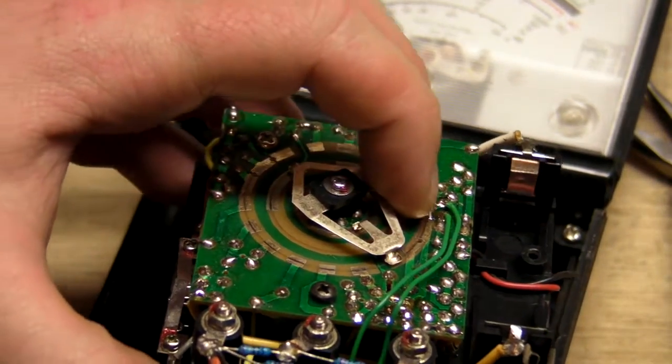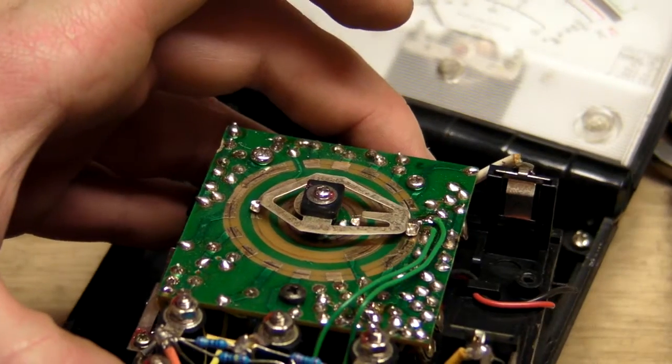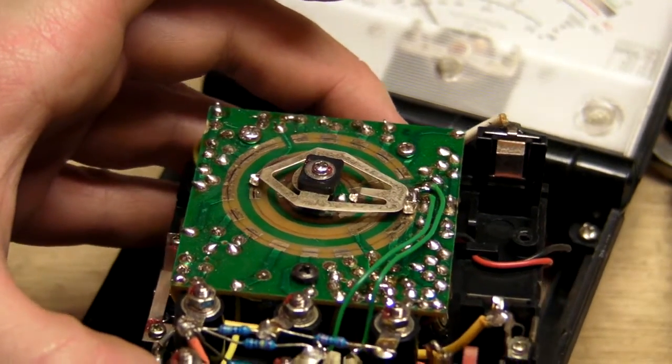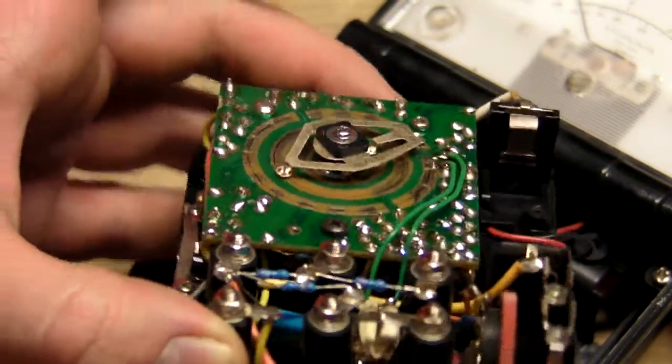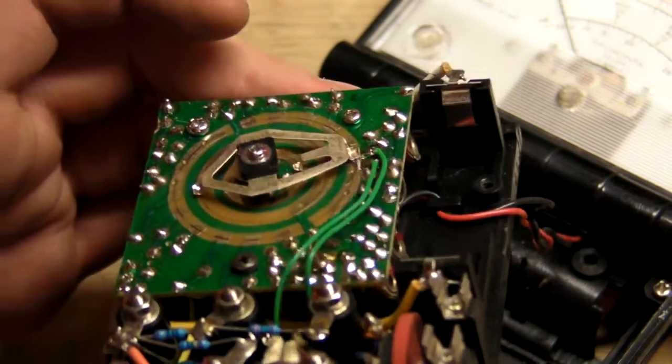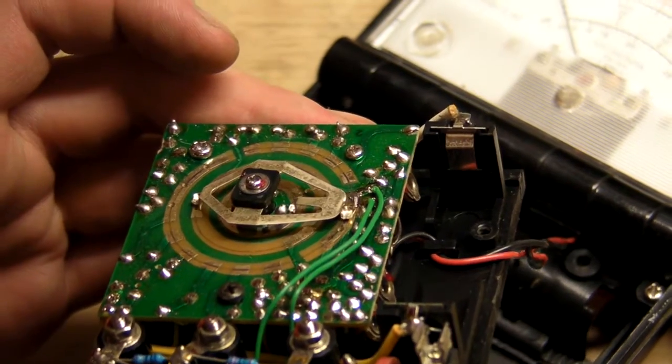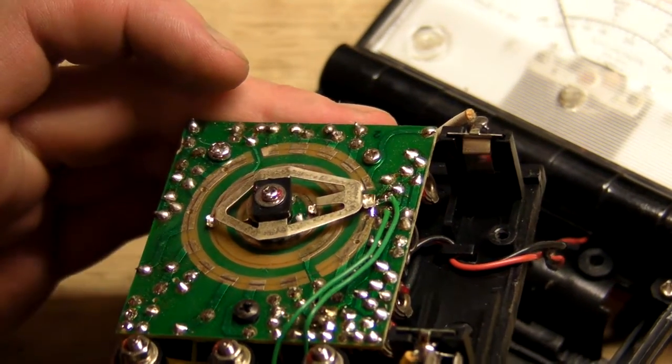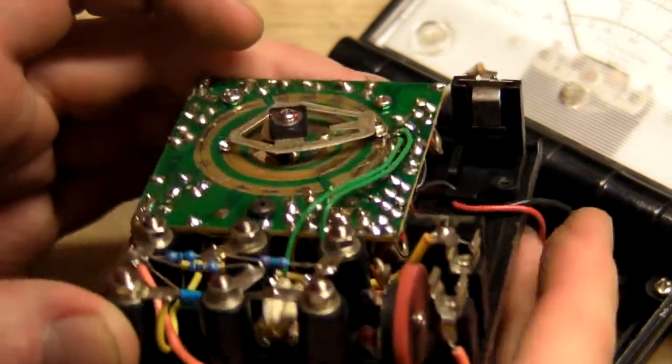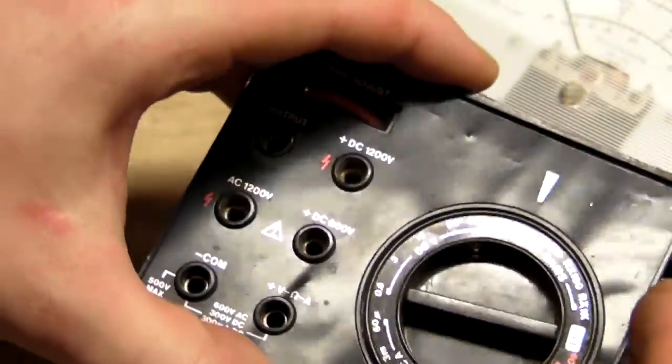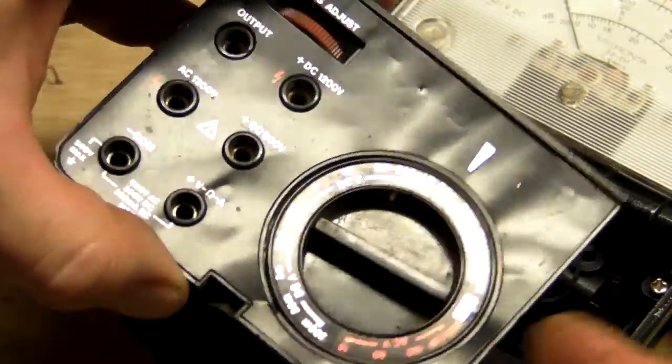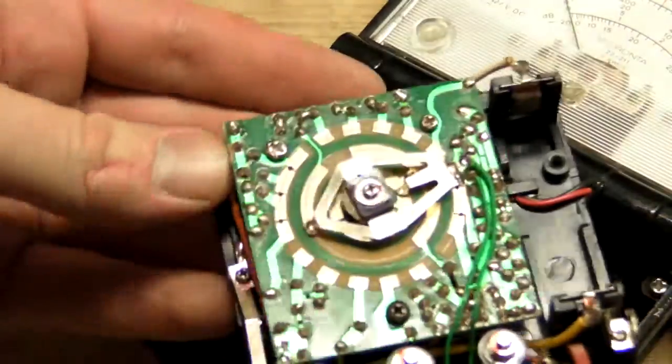There's even a little solder blob right there where the contact goes. It just slides right over top of that. But those resistors are only connected in circuit when it's in the R1 mode, the lowest resistance range.